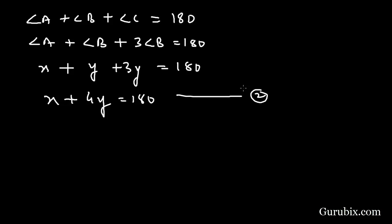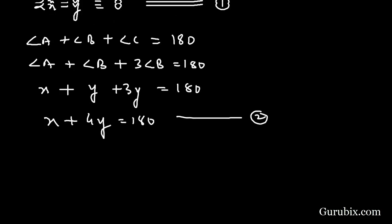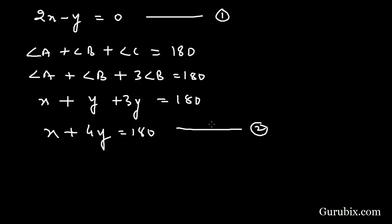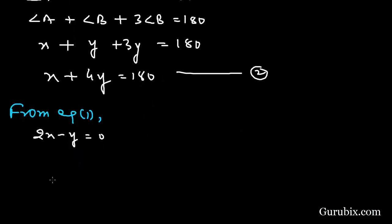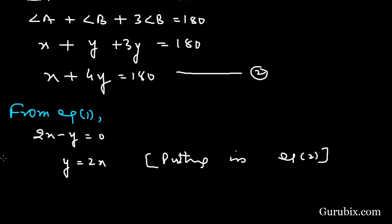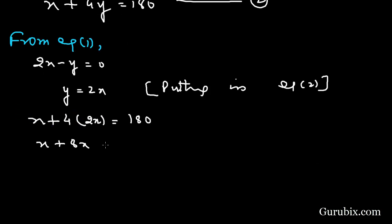Now we apply the substitution method to solve this pair of linear equations. From equation number one, 2x minus y equals 0, so y equals 2x. Substituting into equation number two: x plus 4(2x) equals 180, giving x plus 8x equals 180, so 9x equals 180, therefore x equals 20.